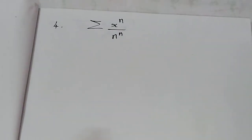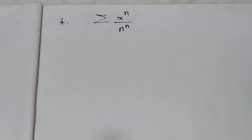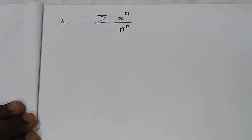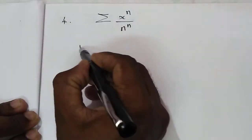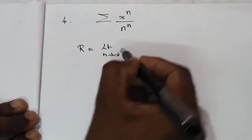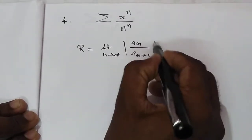The fourth problem is summation of x power n by n factorial. This is a power series. The radius of convergence is equal to limit n tends to infinity.